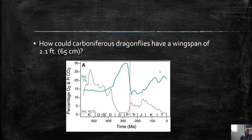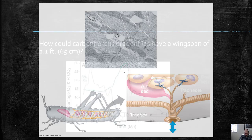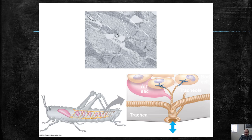Having that much oxygen around made gas exchange easier and allowed those organisms to get bigger than they can now because oxygen was more freely available. We can see a correlation between the amount of oxygen available and the size of certain organisms — it affects evolution. Gas exchange is really important.